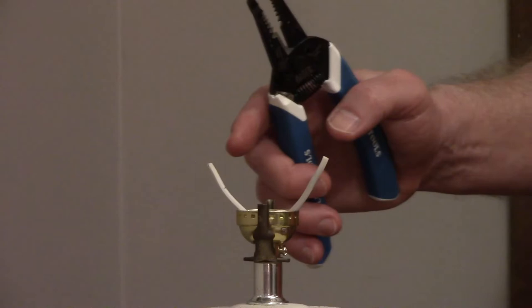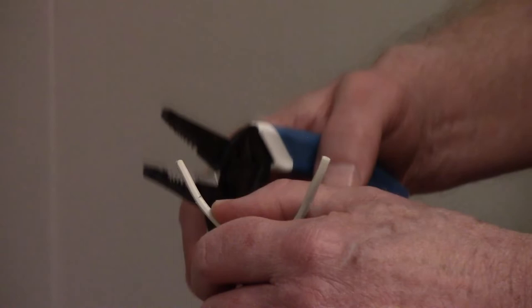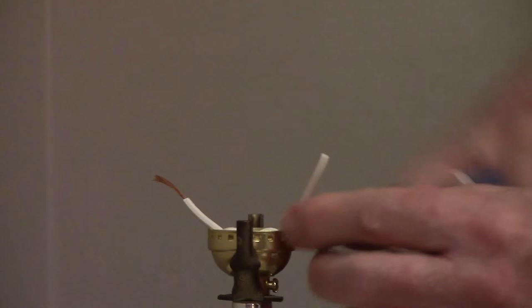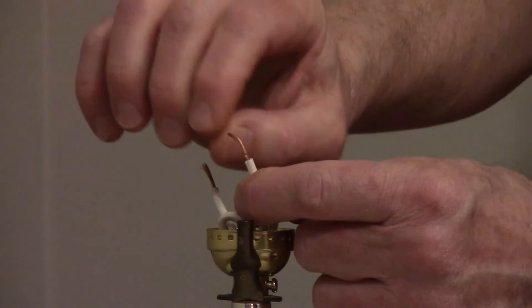You want to strip off about three-quarters of an inch of insulation off both wires, and most lamp cord is going to be 18-gauge stranded wire. Twist the stranded wire together and then you want to create a loop on each wire so it will stay underneath the screw terminal.